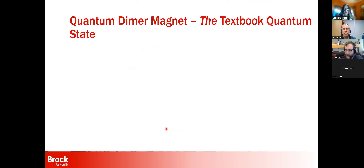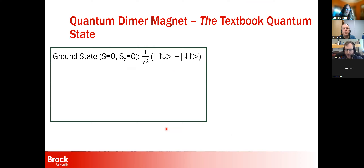Now let's discuss the physics of the system. The state this system exhibits is the quantum dimer magnet state — I think of this as the textbook quantum state. If I were writing a textbook on quantum magnetism, this is what I would introduce people to first.